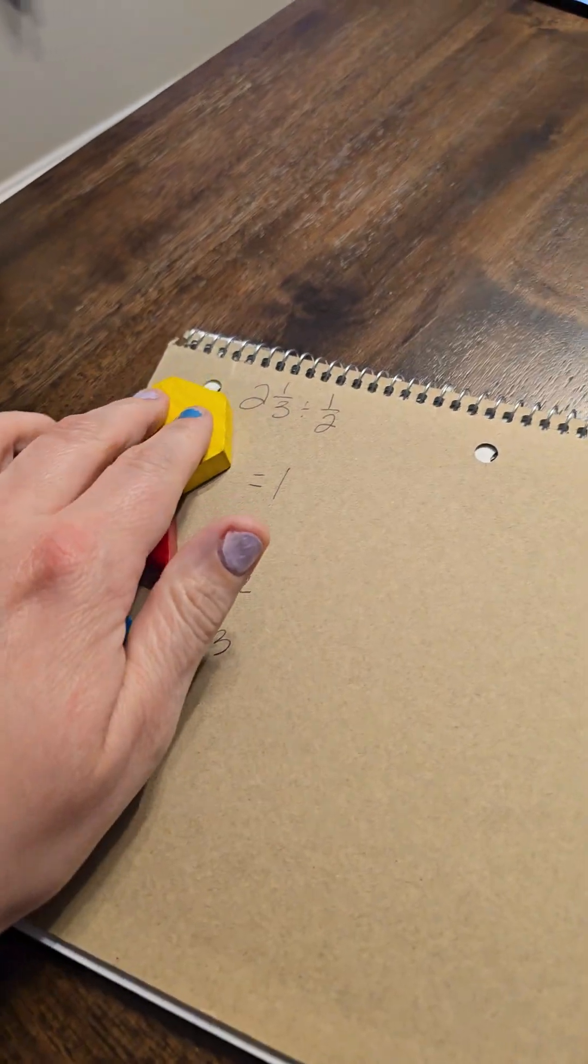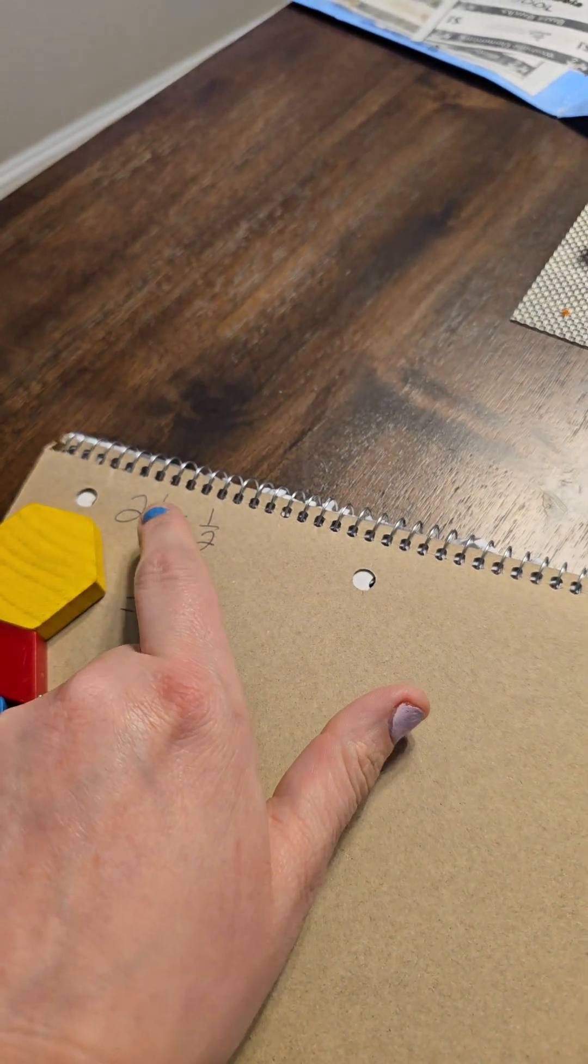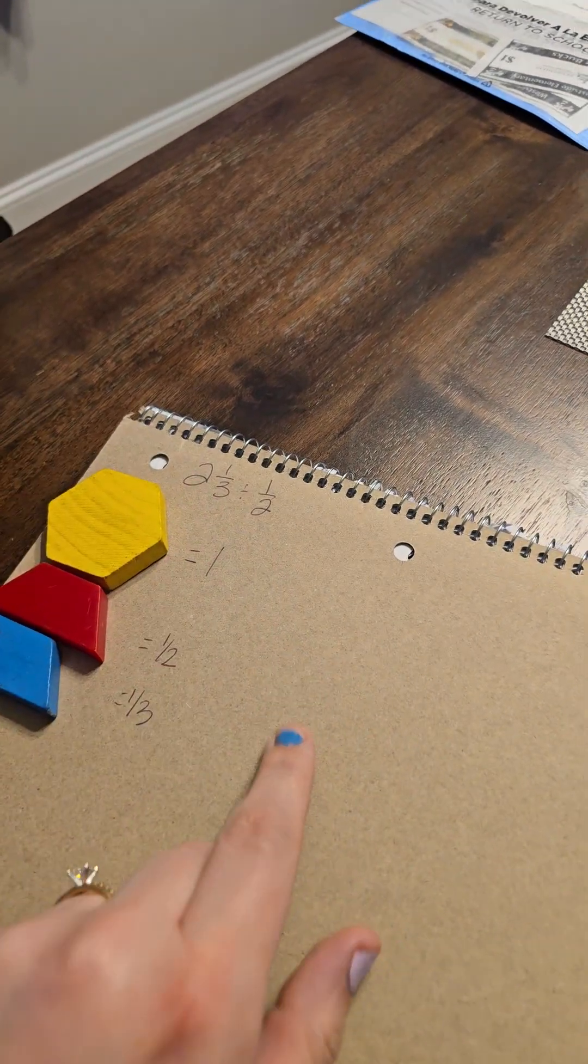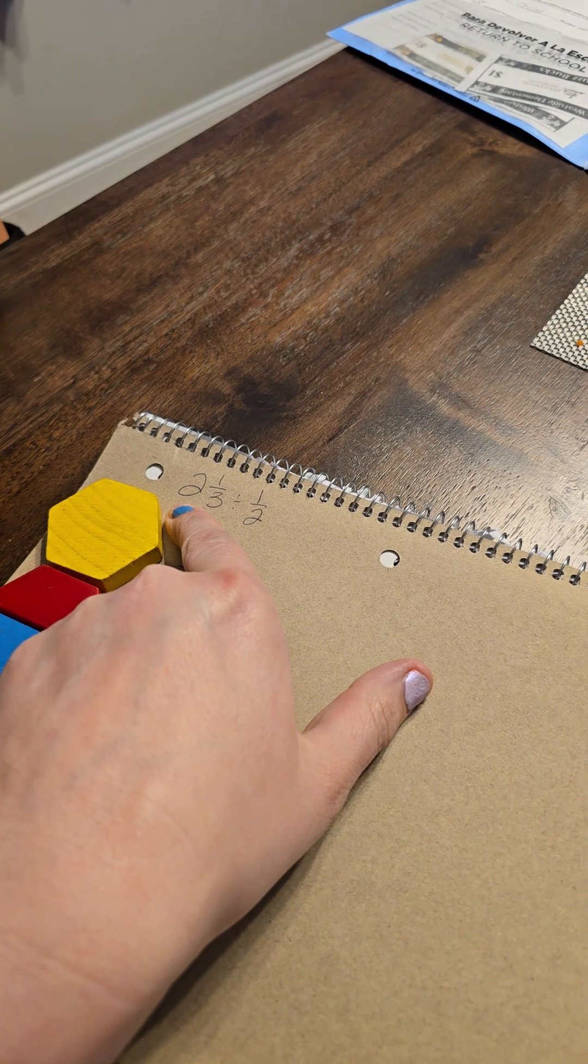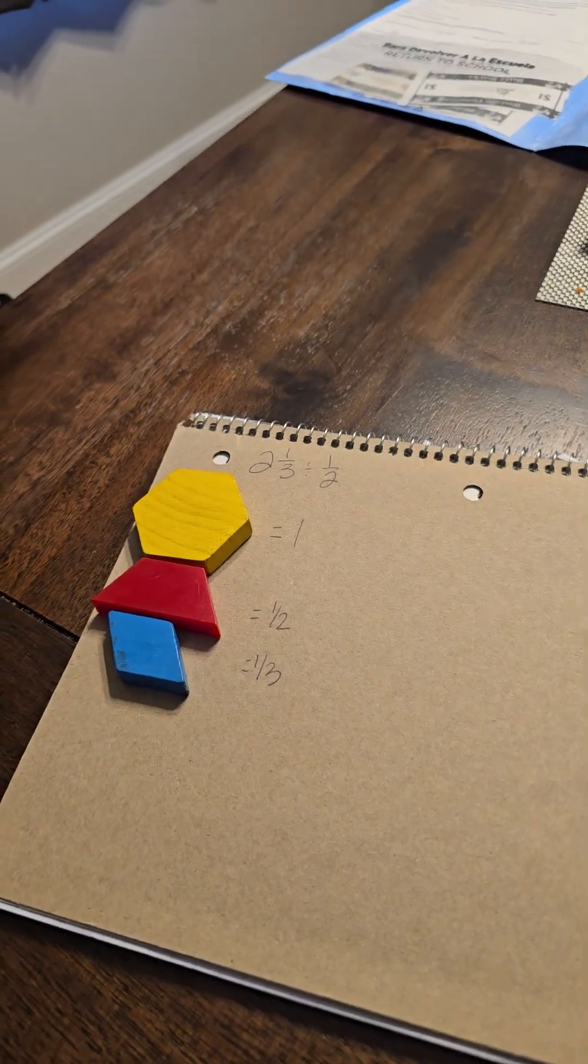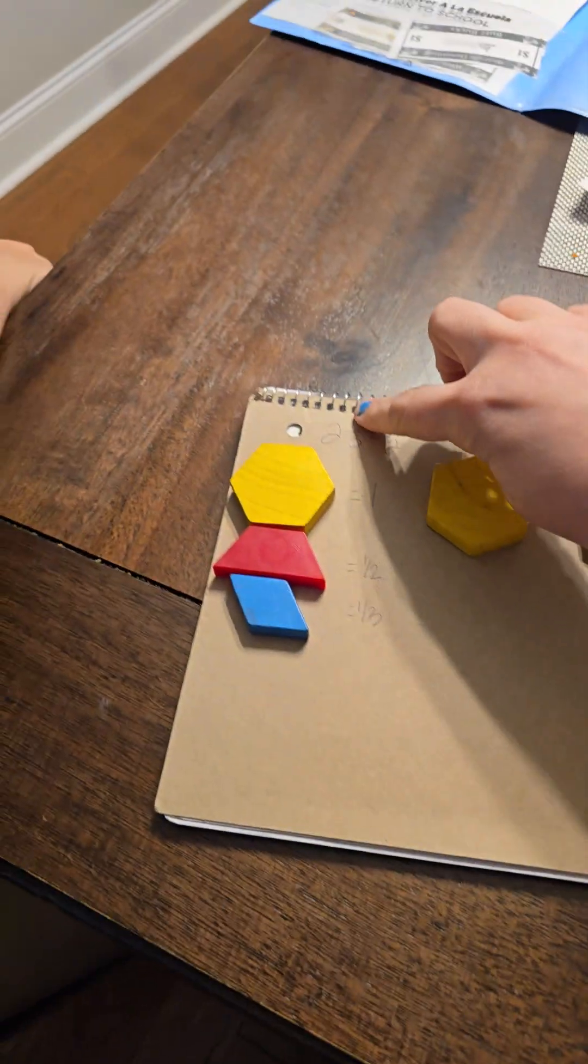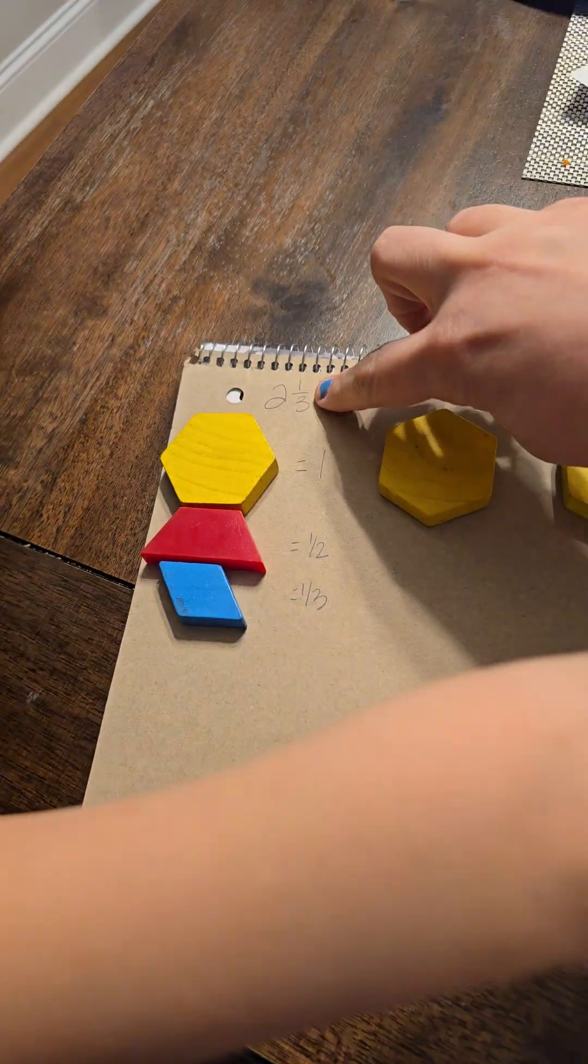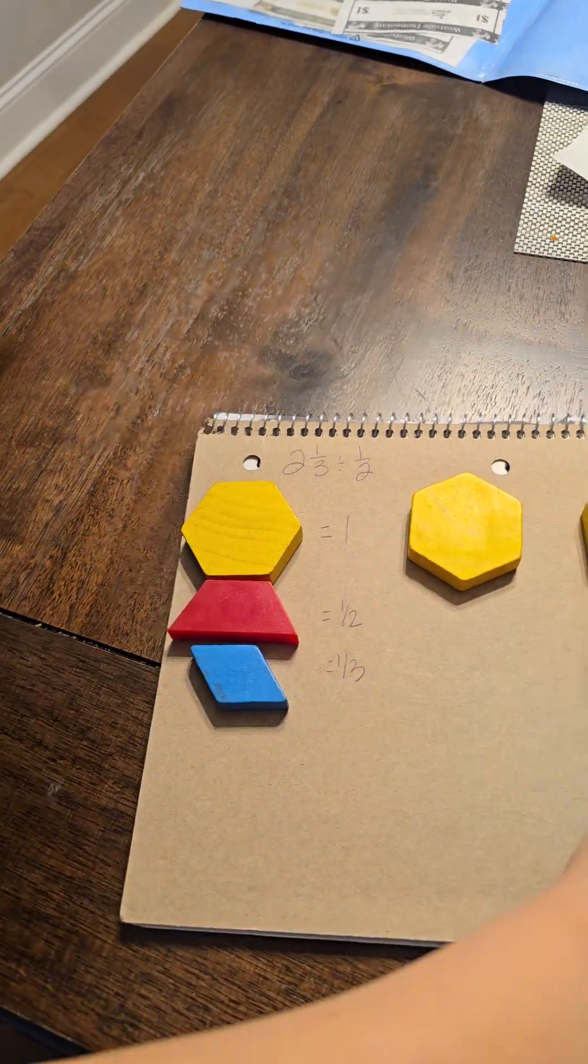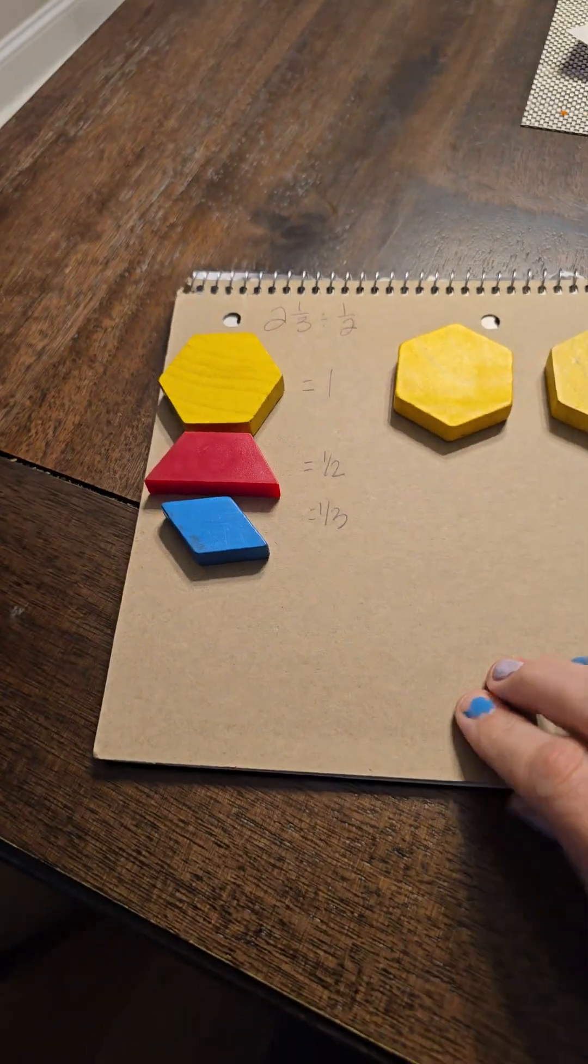We're dividing, so we're going to start with our first number. Two and one-third. If this is two and one-thirds, how many wholes do we need? Six. That's not a six, it's a two. So we need two more. So we have two of these. And then we need a third. Which shape represents a third? So we take one. We just need one. Right.